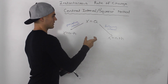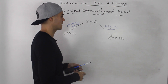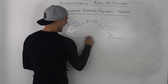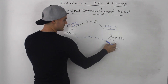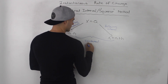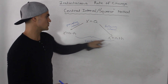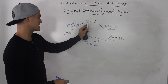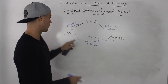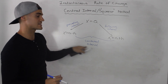The centered interval method, instead of taking the two average rates of change and then averaging them out, just takes the average rate of change between these two outer points — the centered interval. You take a point to the left of x equal to a and a point to the right of it, with equal distances h on each side, and you find the average rate of change once across that centered interval.